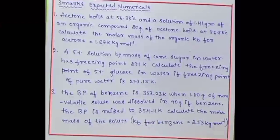Acetone boils at 56.38 degrees celsius. A solution of 1.41 gram of an organic compound in 20 gram of acetone boils at 56.88 degrees celsius. Calculate the molar mass of the organic compound. Kb for acetone value is given. A 5 percent solution by mass of cane sugar in water has freezing point 271 kelvin. Find the freezing point of 5 percent glucose in water. Freezing point of pure water is 273.15 kelvin.